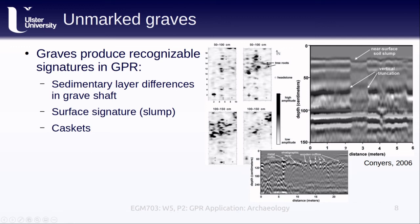The metal coffin is recognizable by the significantly stronger reflection and ringing pattern shown below the reflector. This is caused by the repeated reflection of the signal — effectively, the signal reflects off of the metal, then the air-soil interface, then the metal again, then the air-soil interface again, and so on, which causes this alternating pattern of stacked reflections. The image from a cemetery in Kansas, USA, shows the reflected signal amplitude averaged over different depths. Caskets show up as high amplitude anomalies at multiple depths, though other features like tree roots can also be seen.